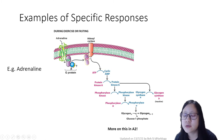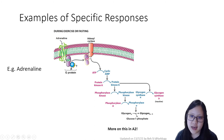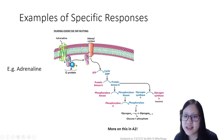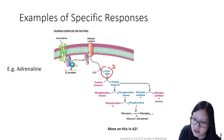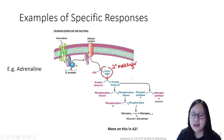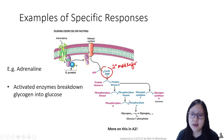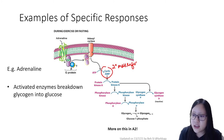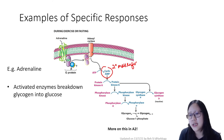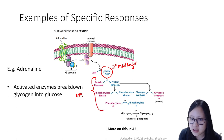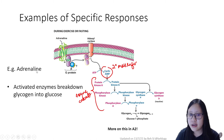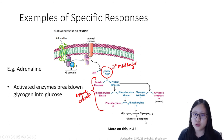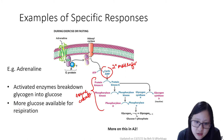The cell surface receptor is complementary in shape to adrenaline and specific for it. Once adrenaline binds, it changes shape, activating the G protein, which activates an enzyme that produces the secondary messenger — in this case, cyclic AMP. This is the example you'll learn more about in A2; it's just given here as an illustration. The secondary messenger results in an enzyme cascade involving phosphorylase and kinase, and the end product is that adrenaline — secreted during exercise or fasting — breaks down glycogen into glucose.